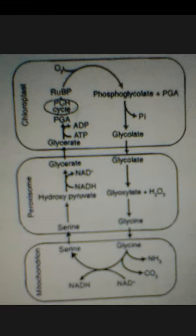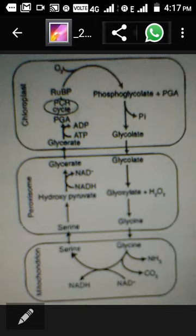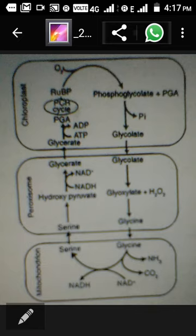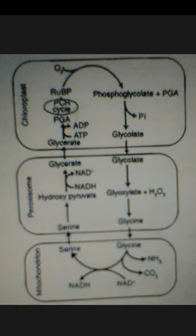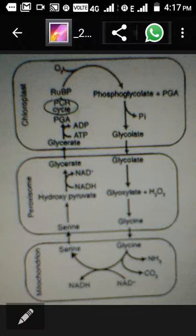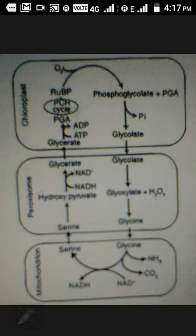This serine then goes back to the peroxisome, where it gets converted into glycerate. Now this glycerate is moved back to the chloroplasts. In this way the cycle continues, and CO₂, ammonia, and NADPH₂ are produced as the byproducts of photorespiration.